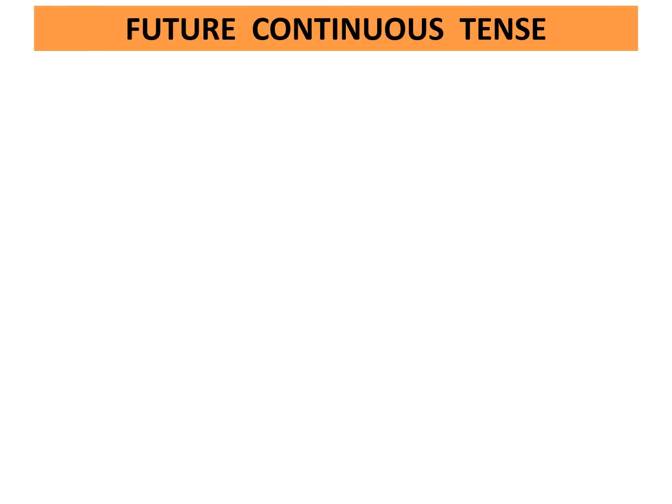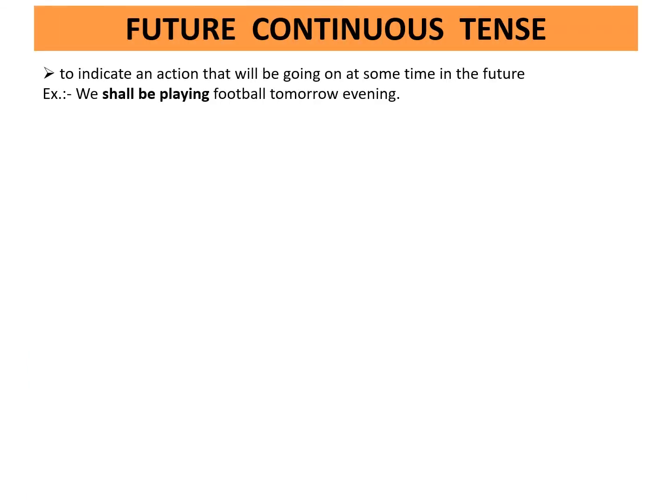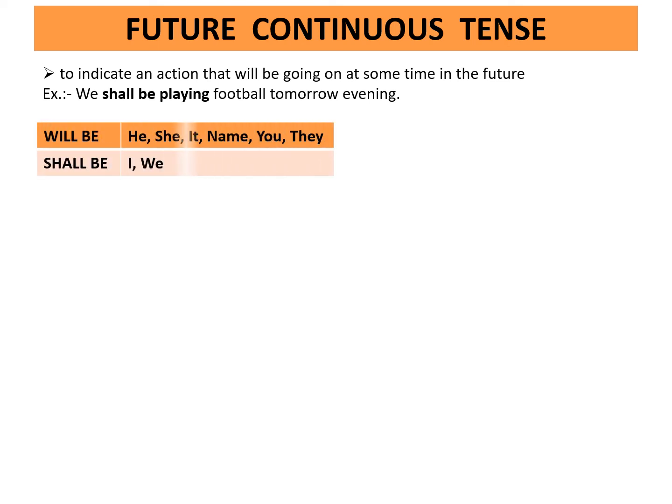Future continuous tense indicates an action that will be going on at some time in the future. Example: We shall be playing football tomorrow evening. Will be is used with he, she, it, name, you, and they. Shall be is used with I and we.